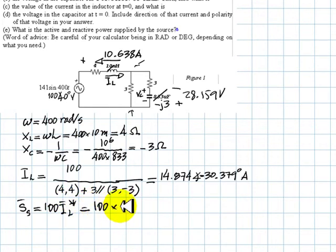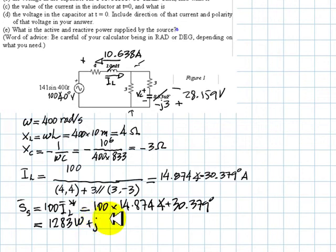That multiplies 14.874 with an angle of positive 30.379 degrees because it's a conjugate of this one. And we write this in rectangular form, which is 1283 watts and 752.2 Vars. And that is the active and reactive power delivered by the source.